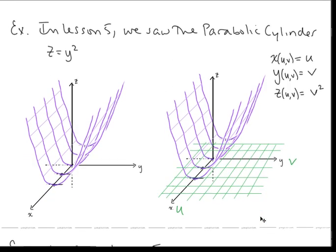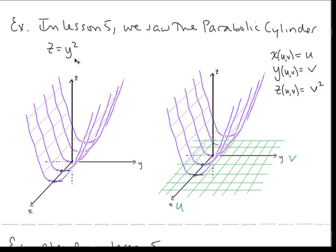In Lesson 5, we saw a parabolic cylinder — we sketched the graph of z equals y squared. Now I want to consider this same surface in three-dimensional space in a different way. I want you to think about the x, y plane as the u, v plane. I want to take this green two-dimensional plane and map it into three-dimensional space, make it a surface, mapping each point in the u, v plane onto a point on this parabolic cylinder.